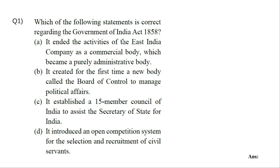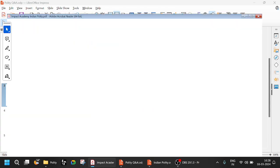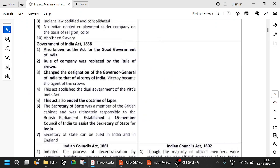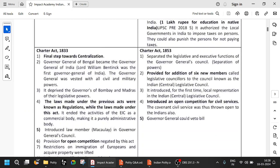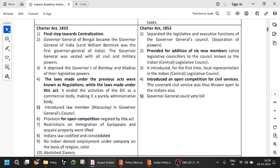Now, which of the following statements is correct regarding the Government of India Act of 1858? Option A says: the activities of the East India Company as a commercial body became a purely administrative body. That statement actually belongs to the Charter Act of 1833. These are the important points of 1833. The first and foremost thing in 1833 you have to remember is Lord William Bentinck — the Governor-General of Bengal now became Governor-General of India, and the first Governor-General of India is Lord William Bentinck.